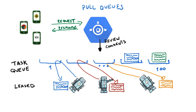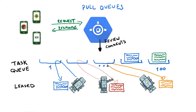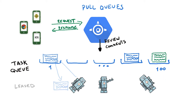The tasks that are pulled from the queue are leased by the external workers. The worker must complete the task within the lease time, in which case it can be deleted. But if the task is not completed within the lease time, it is automatically returned to the queue.